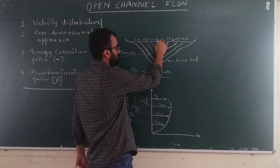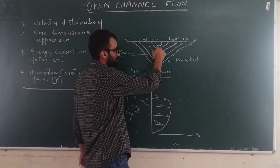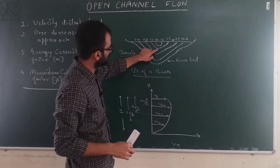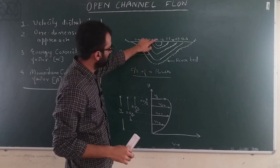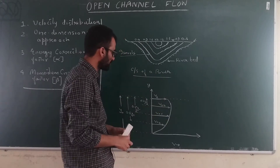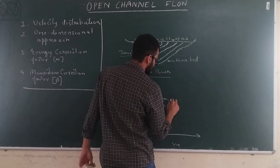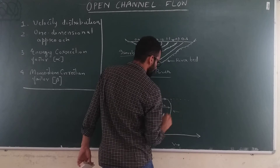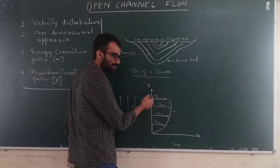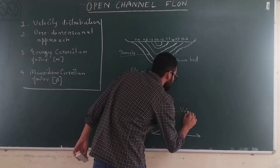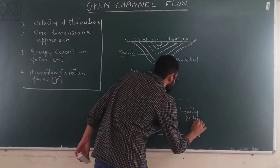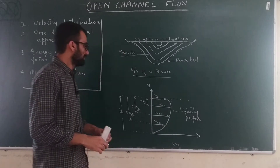If you plot the variation of velocity along the depth — say you go to the center of the river and measure velocities at several points along the depth — you will get a profile. This profile showing the variation of velocity along the depth of flow is called the velocity profile.